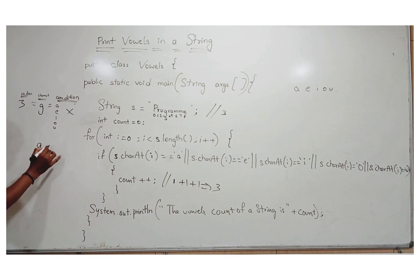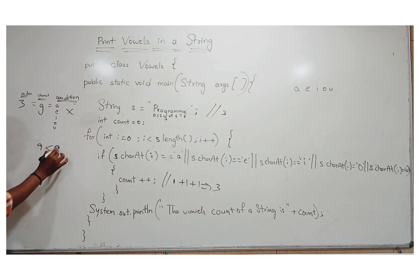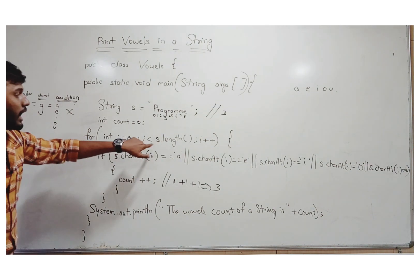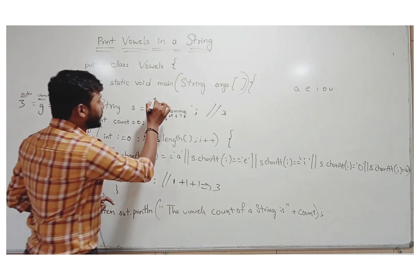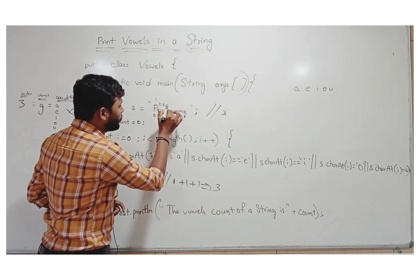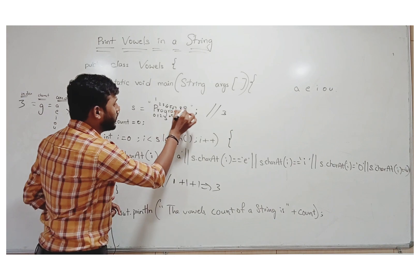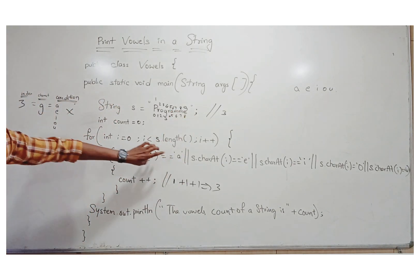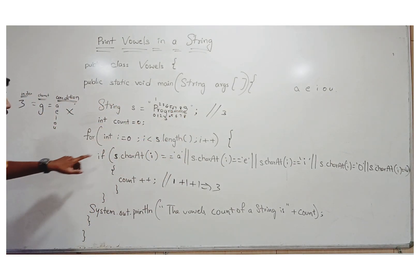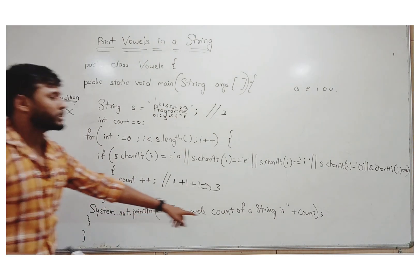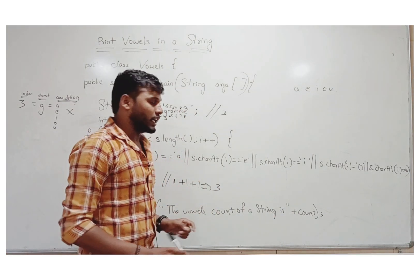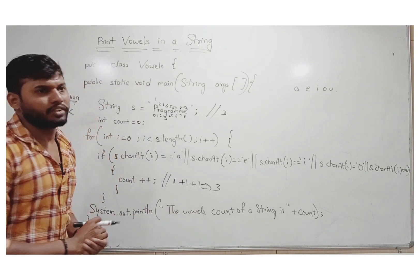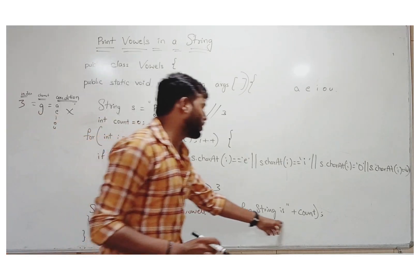After the loop completes, the index reaches nine. Since nine is not less than nine (the length of 'program' is nine characters: one through nine), the loop condition breaks and execution stops. Finally, we get the output: the vowel count of the string is three.